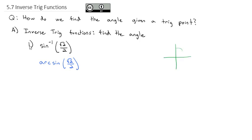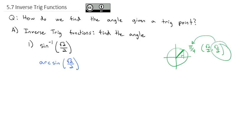If I draw my little unit circle, I should recognize root 2 over 2 comes from that center angle. Sine is the y-coordinate, but actually both sine and cosine are the same. When that angle is pi over 4, the point is root 2 over 2 comma root 2 over 2. We're looking for the y, so that equals the angle pi over 4.